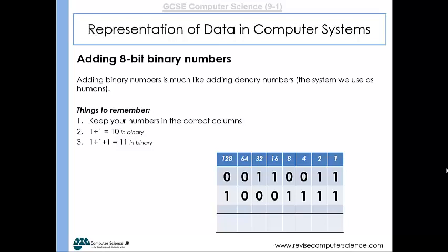Starting on the right-hand side: 1 plus 1 is 2, which is 10 in binary — a two-digit number. We can't put two digits in one column, so we put the right-hand digit (0) underneath and carry the 1 over. The next column is 1 plus 1 plus 1, which is 3, and 3 in binary is 11. Again it's two digits, so we put the right-hand digit (1) underneath and carry the 1 over.